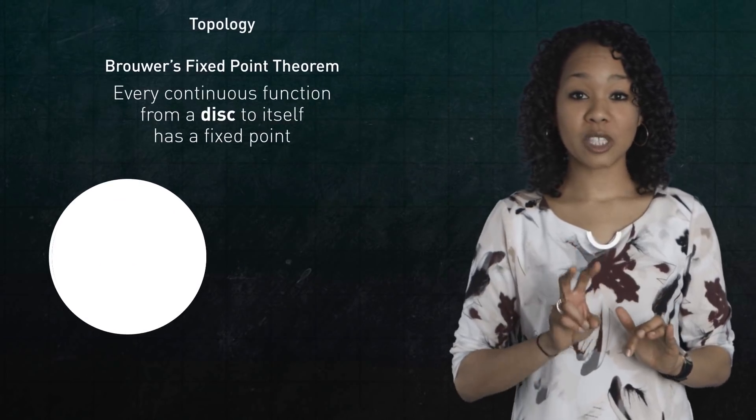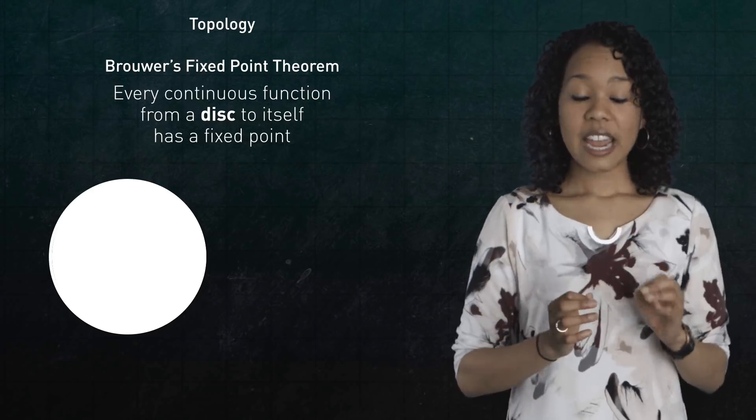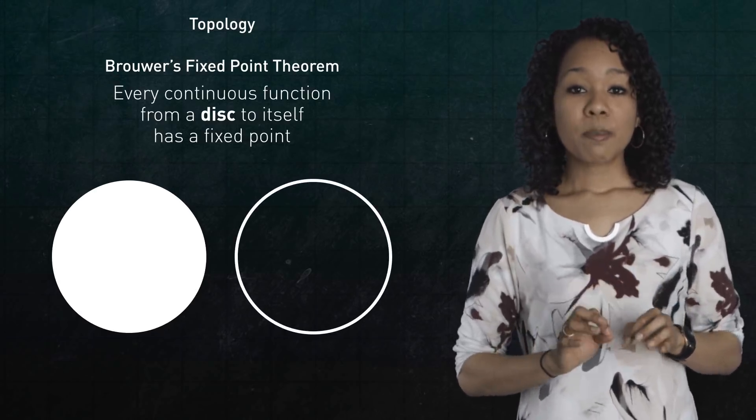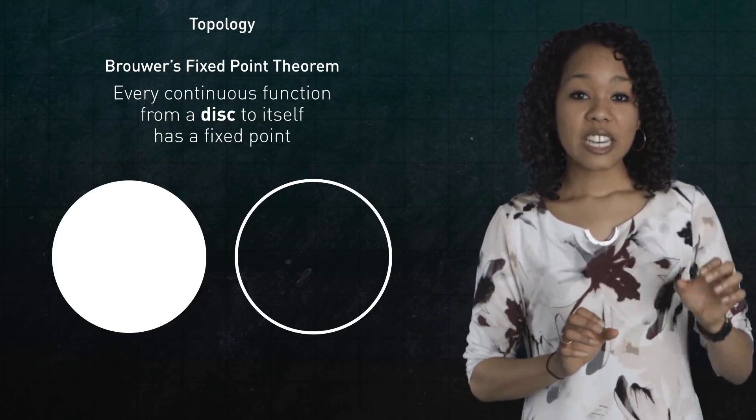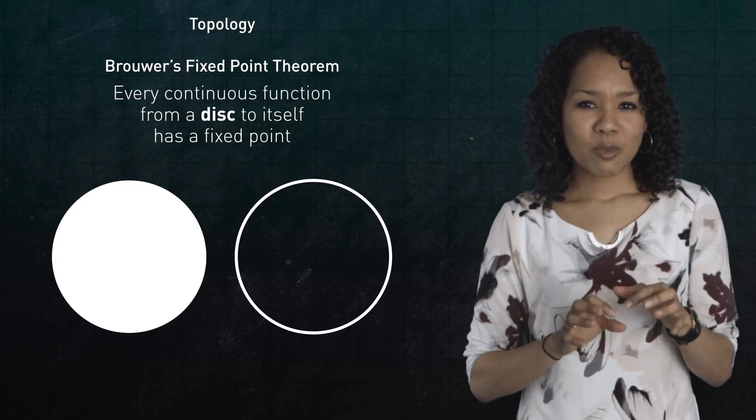First, notice that there are not one, but two topological spaces in the statement of Brouwer's fixed-point theorem. There's a disk, and then there's the boundary of the disk, which is a circle. The portal from topology to algebra assigns to each of these shapes an algebraic gadget that keeps track of the loops within the shape.